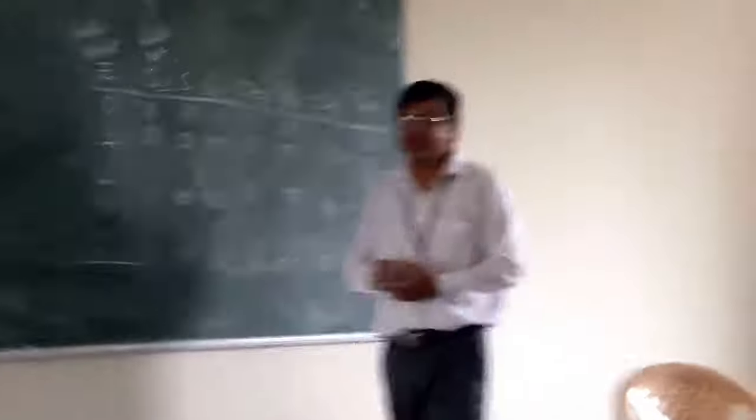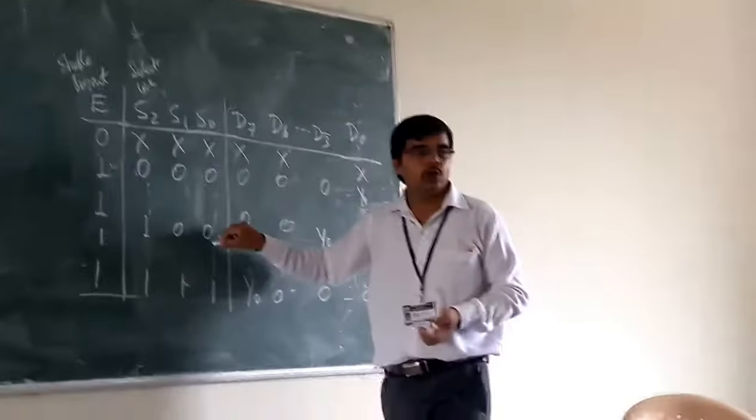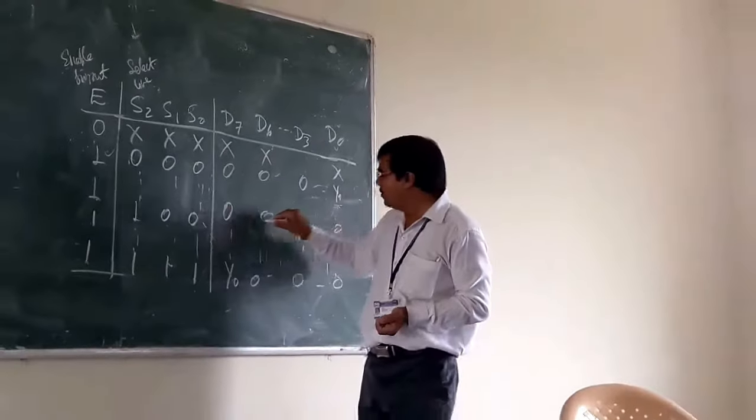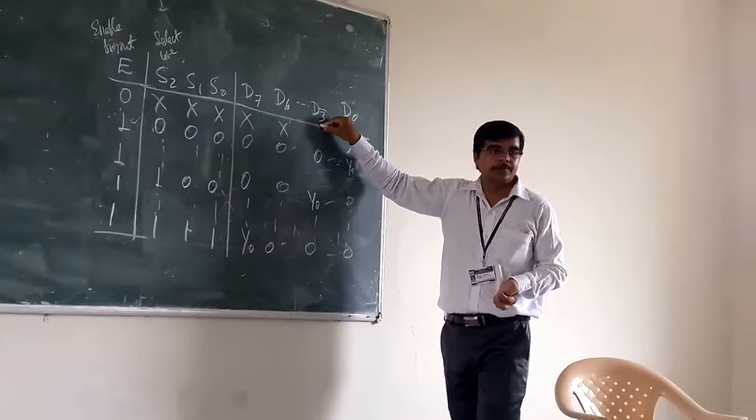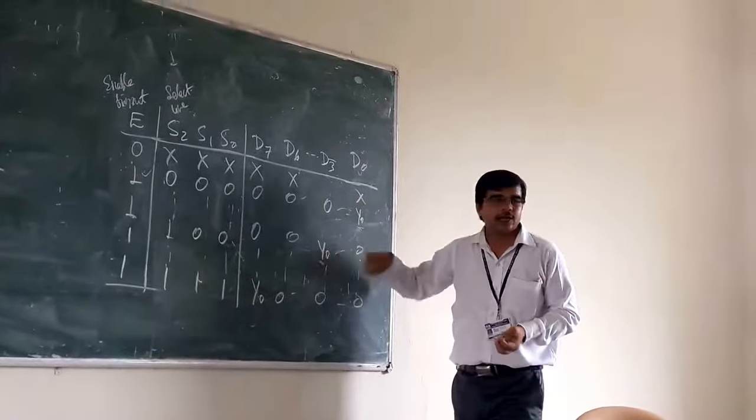Now, let us assume that we are having 1, 0, 0. When we are having 1, 0, 0, that means your D3. At your D3, you will get your output. Remaining will be 0 only.